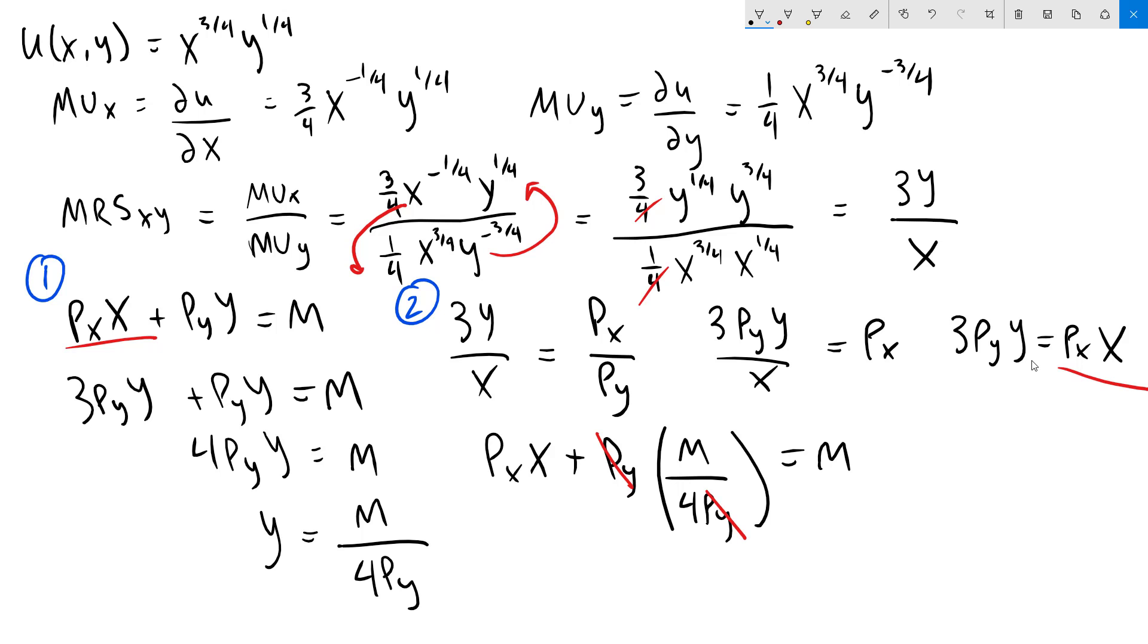which will give us Px x equals 3m over 4. Now just divide both sides by Px, and that's going to give me x equals 3m over 4 Px.